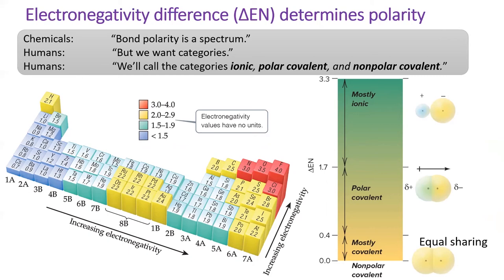But humans have a desire to categorize every natural phenomenon we encounter, so we made the following arbitrary cutoffs. If the difference in electronegativity is less than 0.4, we consider the bond to be nonpolar covalent. If the difference in electronegativity is greater than 0.4, we consider that bond to be a polar covalent bond — one atom will have a partial positive charge, and one atom will have a partial negative charge, and the dipole arrow points toward the atom with the partial negative charge. If the difference in electronegativity is greater than 1.7, we consider that an ionic bond. This large difference in electronegativity is usually only seen when a metal and a nonmetal atom bond together, which is why ionic compounds are composed of a metal cation and a nonmetal anion.